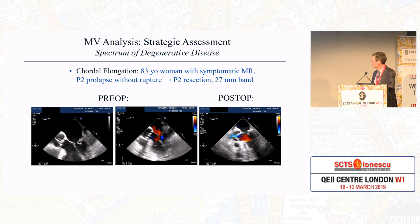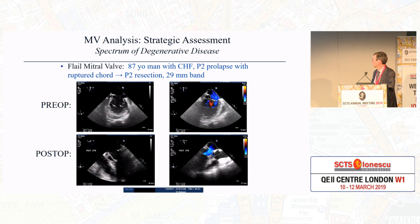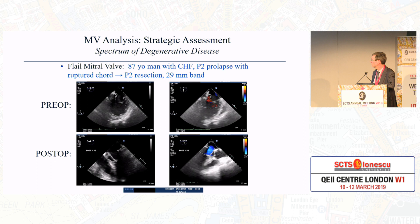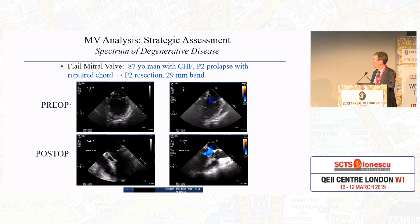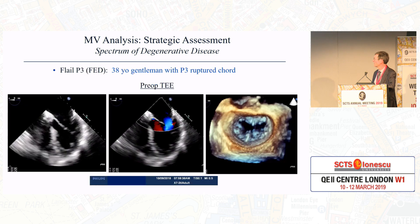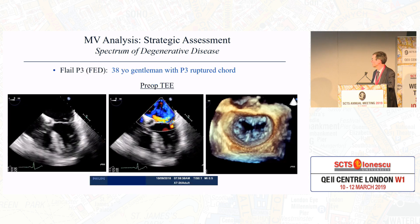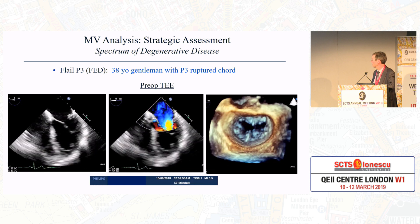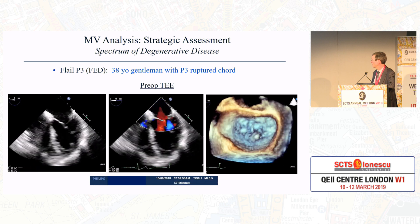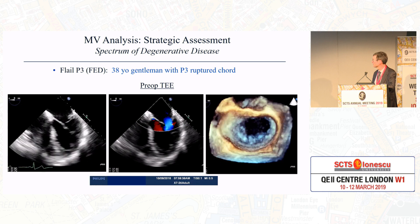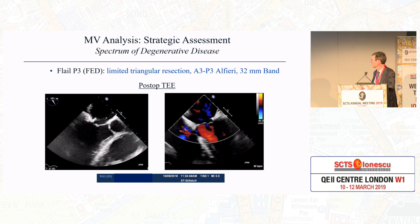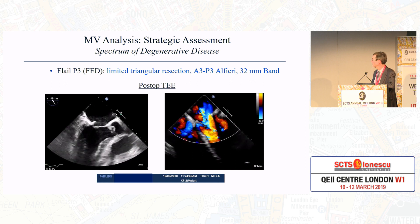Here is a flail with a ruptured cord, jet going behind the anterior leaflet, and following repair, good coaptation and elimination of regurgitation. This patient had P2 prolapse with a cord ruptured extending beyond the annular plane. Here's a flail P3 with a ruptured cord visible in 3D near the P3 region, and following a limited triangular resection with a 32-millimeter band and an Alfieri stitch, regurgitation was eliminated with good coaptation.